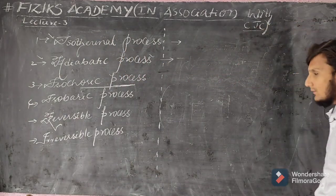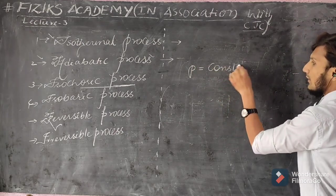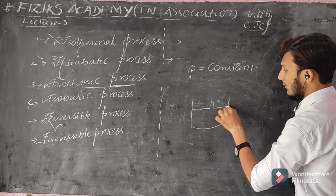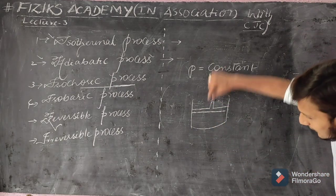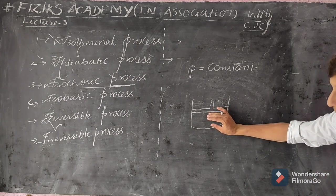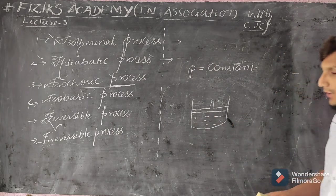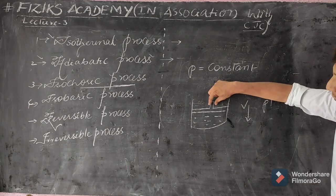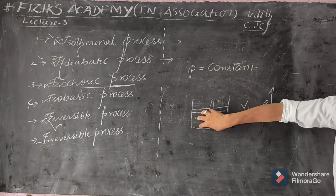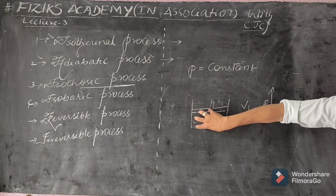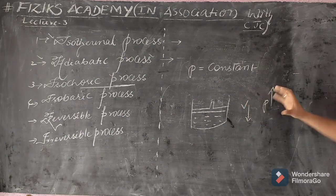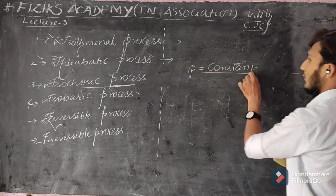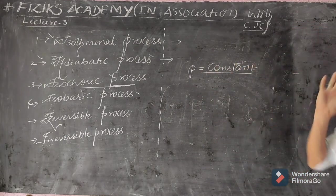The isobaric process is the process where the pressure remains constant. In the container with a movable piston, if I move the piston downward the available volume decreases and the pressure between the gas or liquid molecules increases. As the volume goes on decreasing the pressure goes on increasing — the fluid gets compressed, volume decreases and pressure between molecules increases.